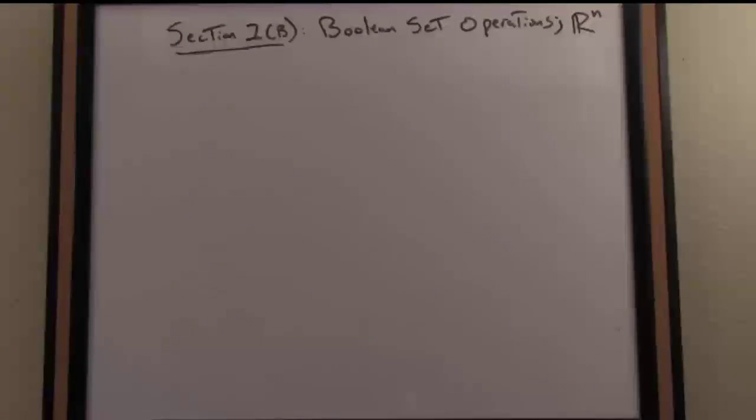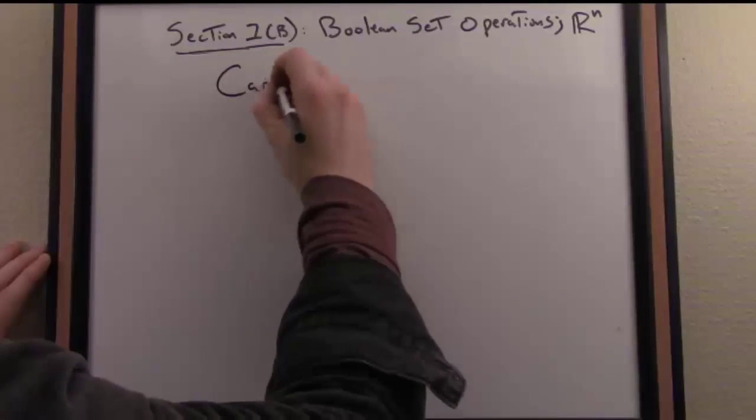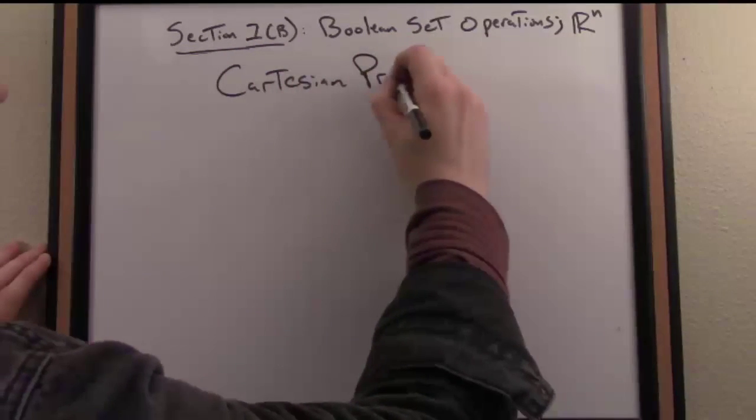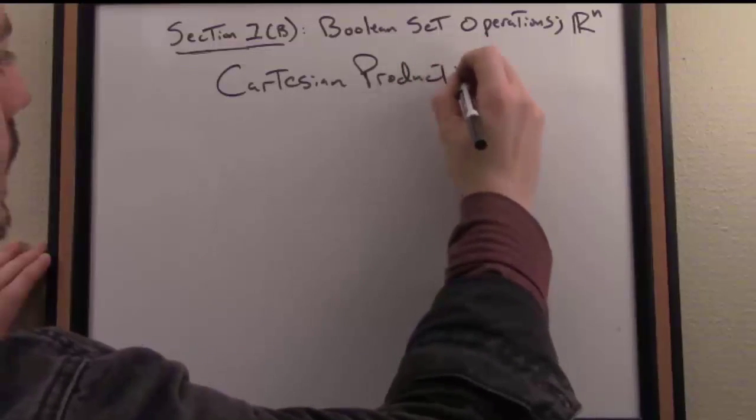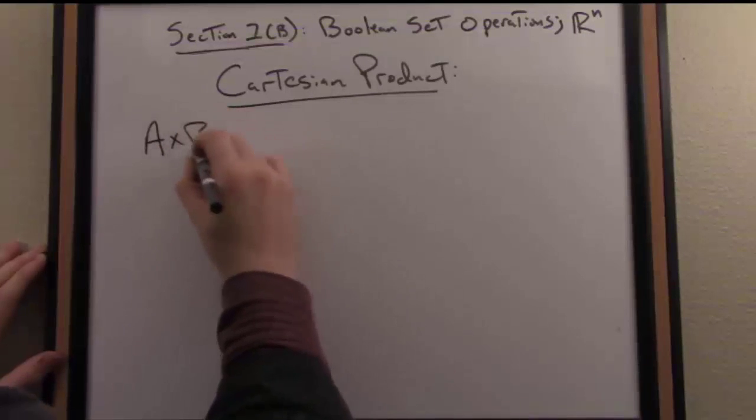I'd like to finish up here by defining one last operation between sets and that operation is called the Cartesian product of sets. So Cartesian here is referring to Descartes, the founder of analytic geometry, French philosopher, and the definition is relatively simple.